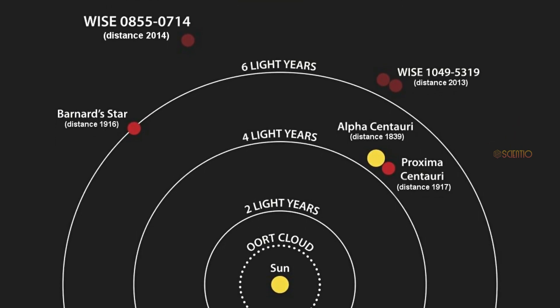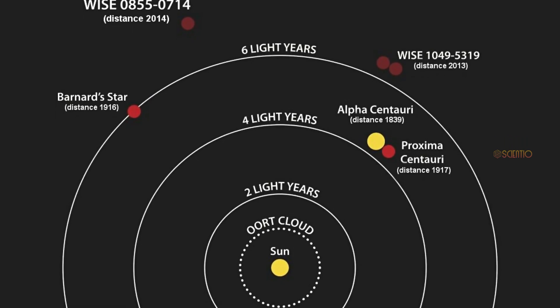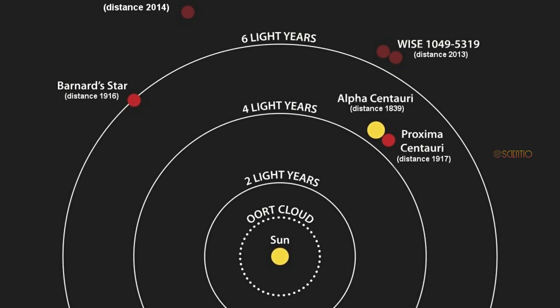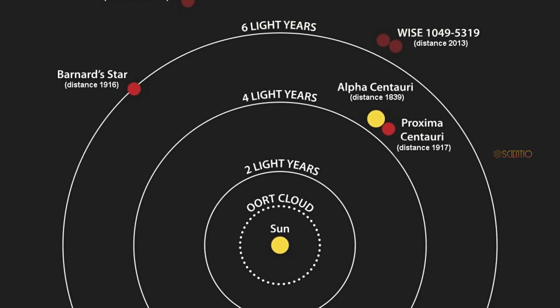Several exoplanets have been discovered orbiting the stars in the Alpha Centauri system, although none have yet been found in the habitable zone.